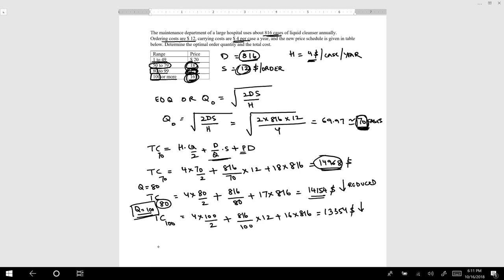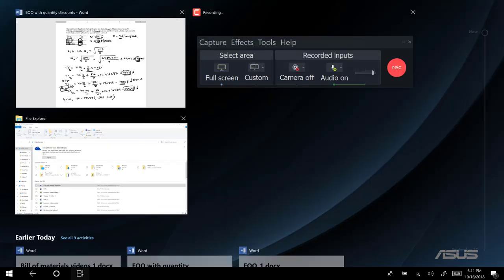So the answer for this question would be Q equals 100, which will give us a total cost of $13,354, which is the least cost. This concludes my lecture on EOQ with quantity discounts. Thank you.